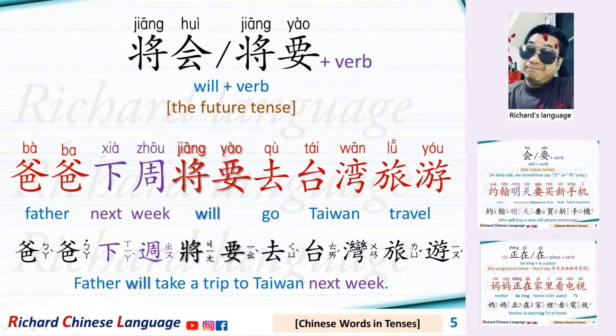将会 or 将要 plus a verb. This is the future tense. For example: 爸爸下周将要去台湾旅游 — Father will take a trip to Taiwan next week.